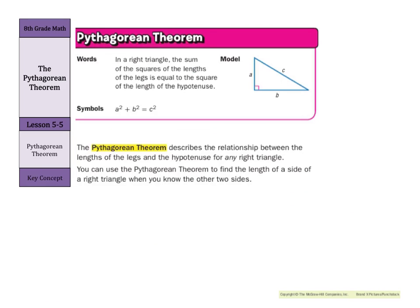The Pythagorean theorem describes the relationship between the lengths of the legs and the hypotenuse for any and all right triangles. You can use the Pythagorean theorem to find the length of a side of a right triangle when you know the other two sides. The formula you'll hear over and over again: A squared plus B squared equals C squared, as long as A and B are your legs and C is your hypotenuse.